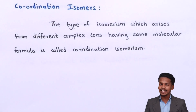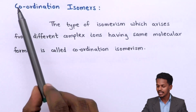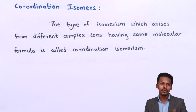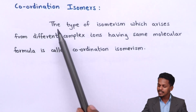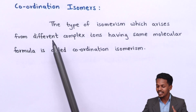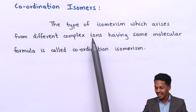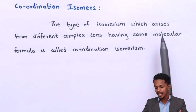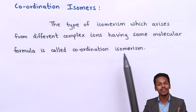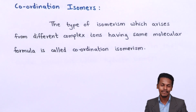Now talking about the next isomerism — coordination isomers. This type of isomerism arises from different complex ions having the same molecular formula, and is called coordination isomerism.